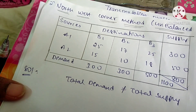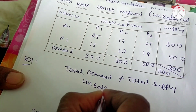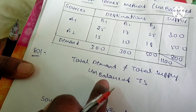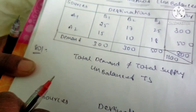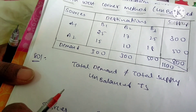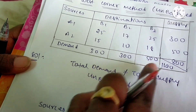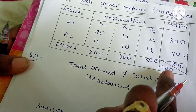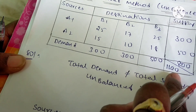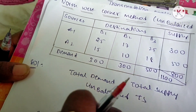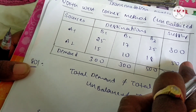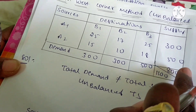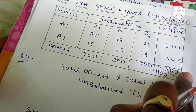Since 1100 does not equal 800, this is an unbalanced transportation problem. We need to convert it to balanced. The demand is 1100 and supply is 800, so demand has an excess of 300 units more than supply. We require 300 additional units of supply to equalize both sides.